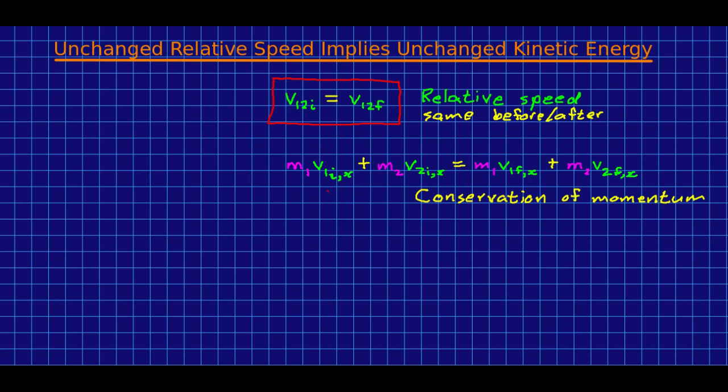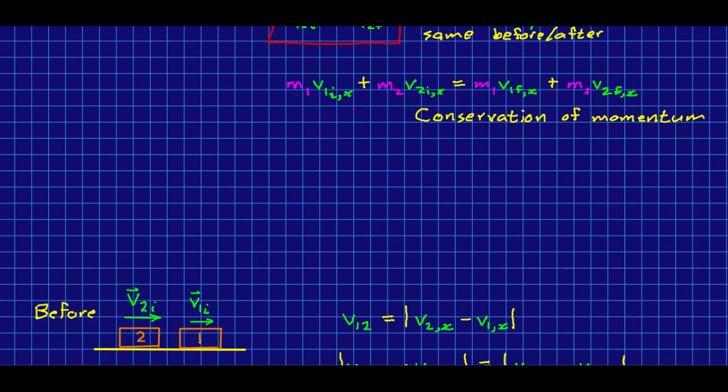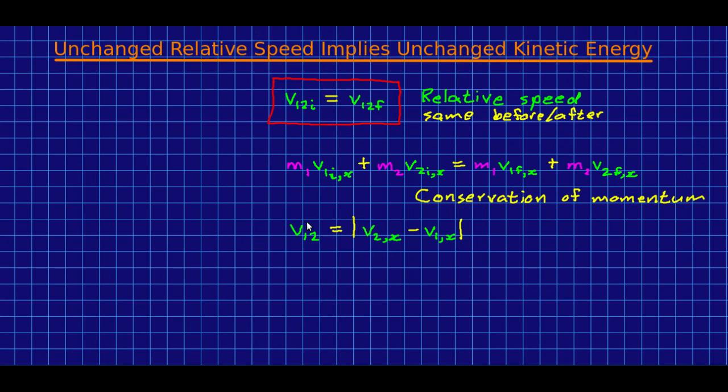And there are just a couple more ingredients I need, and I've got them down here. One is our way of calculating a relative speed in one dimension. And I showed you this earlier. We just take the absolute value of the differences in the x components in the velocities.